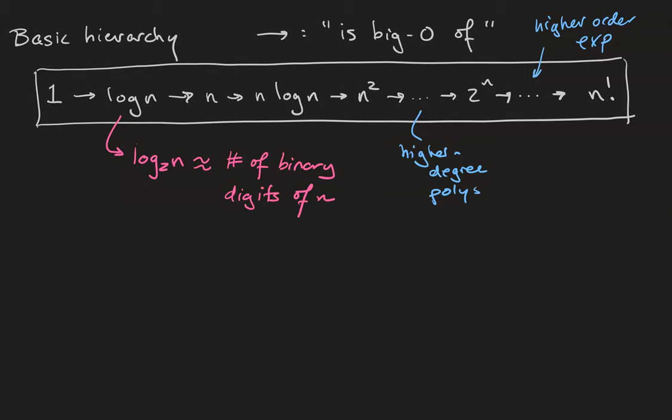Notice that anything in the hierarchy is big O of anything to its right. When you have an upper bound on your growth, which is what big O relationships are talking about, you actually have a lot of upper bounds on the growth.